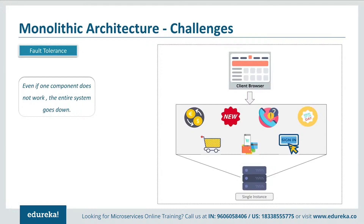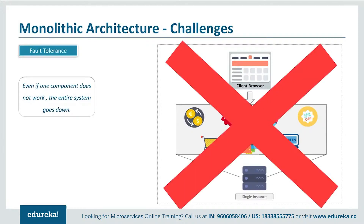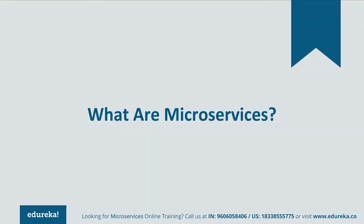The third challenge is fault tolerance. Consider your shopping cart application: even if one feature of the application doesn't work, then the entire system goes down. This not only creates a problem for the users, but also for the developers as they have to rebuild it again. So, to avoid these challenges, developers decided to shift from monolithic architecture to microservices.